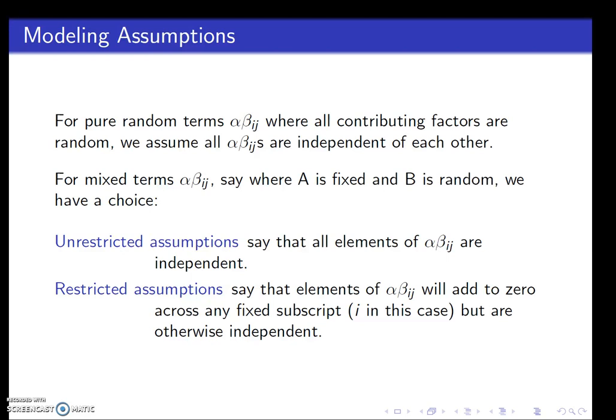The mixed terms where, say, A is fixed and B is random, we have some choices to make, some options. We can assume the unrestricted model where we just presume that alpha betas are all independent. Often, this makes a lot of sense, we'll talk about concrete cases in class, about where it makes sense to assume the unrestricted model.